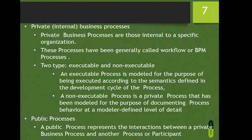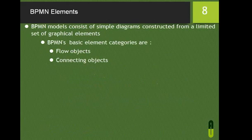Public processes represent the interaction between a private business process and another process or participant. A public process is essentially a place where multiple processes can interact — whether private or global — allowing multiple processes to be configured and met at the same place.